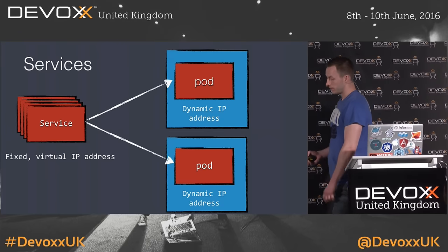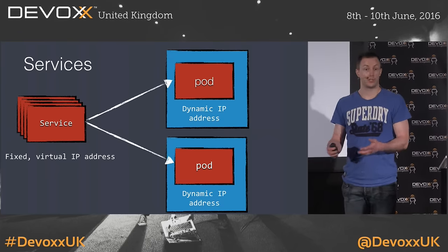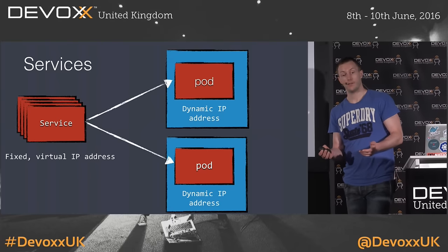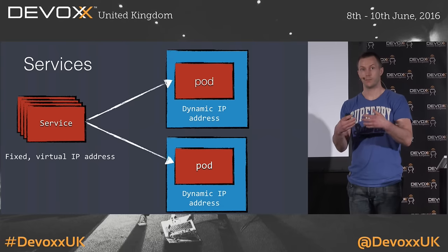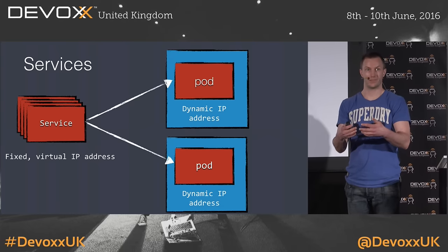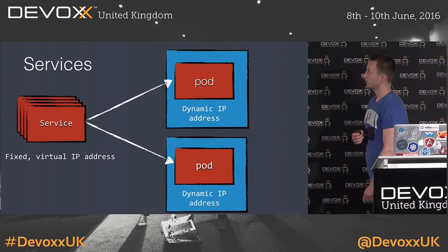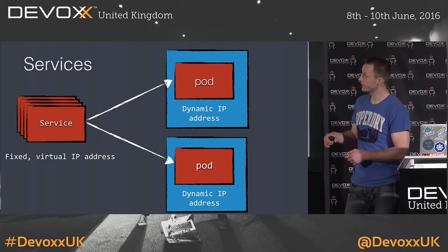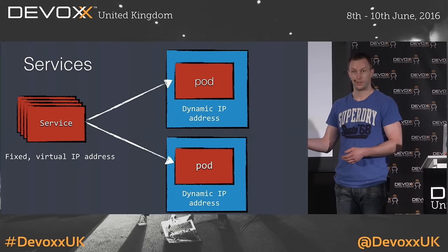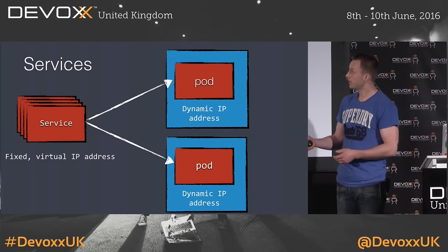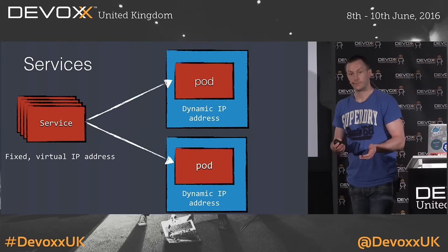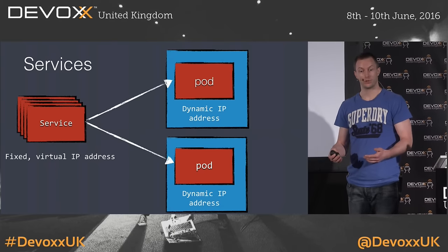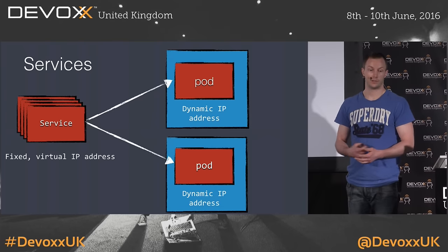Of course then we also get a new problem: if virtual IP addresses change every time we restart a container, how do you actually use those containers? If two different pods have to communicate with each other and their IP addresses keep changing, that's going to be tricky. To fix that problem, Kubernetes has another concept which are services. A service is a kind of proxy on top of your pods with a fixed virtual IP range. When you want pods to communicate with each other, they communicate using a service using this fixed IP address, and the service will just round-robin the traffic to the different replicas.